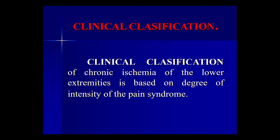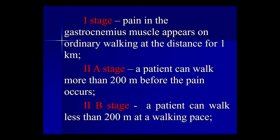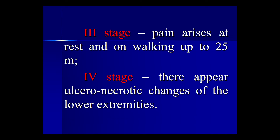Clinical classification of chronic ischemia of the lower extremity is based on the degree of intensity of the pain syndrome. Stage 1: pain in the gastrocnemius muscles appears on ordinary walking at a distance of one kilometer. Stage 2a: patient can walk more than 200 meters before pain occurs. Stage 2b: patient can walk less than 200 meters. Stage 3: pain arises at rest and on walking up to 25 meters. Stage 4: ulcero-necrotic changes of the lower extremities.